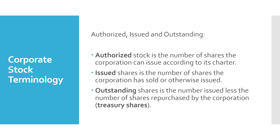We're going to go through some important corporate stock terminology now. The first three terms are authorized, issued, and outstanding. Authorized stock is the number of shares the corporation can issue according to its charter — typically a large number of millions or tens of millions, as it covers how many shares the corporation is allowed to issue over its life. Issued shares is the number of shares the corporation has sold or otherwise issued. Outstanding shares is the number issued less the number of shares repurchased by the corporation. When a corporation repurchases its own shares, we refer to that as treasury shares, so outstanding shares equals issued shares minus treasury shares.